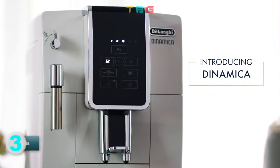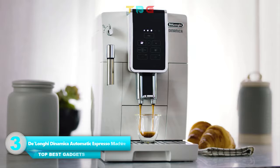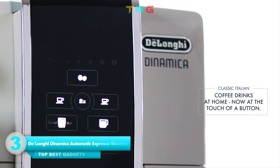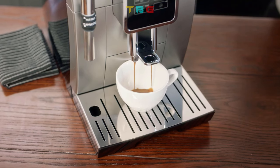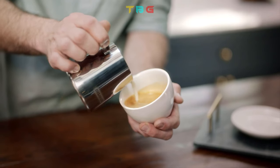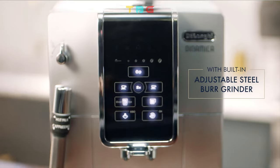Number three: DeLonghi Dinamica Automatic Coffee and Espresso Machine. DeLonghi TrueBrew Over Ice is the first and only fully automatic coffee and espresso machine with iced coffee feature.